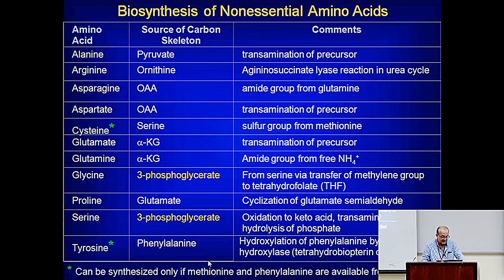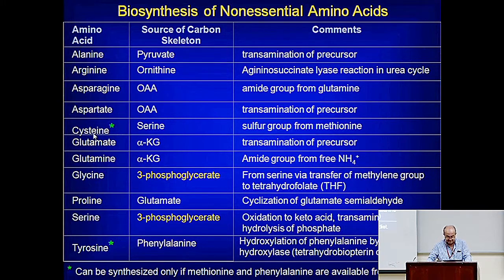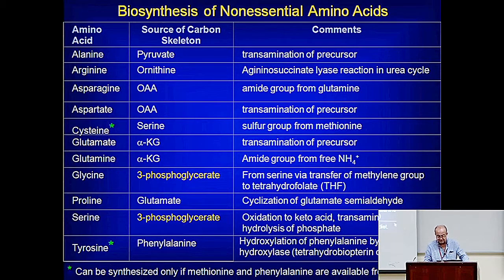Tyrosine is derived from the essential amino acid phenylalanine, via phenylalanine hydroxylase. Similarly, cysteine is derived from the essential amino acid methionine. So if methionine is missing, you must supplement with cysteine, and if phenylalanine is missing, you must supplement with tyrosine.